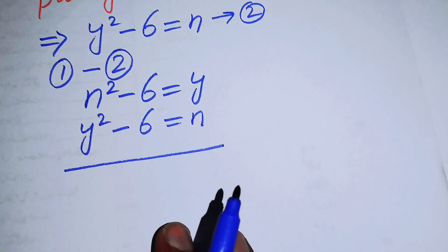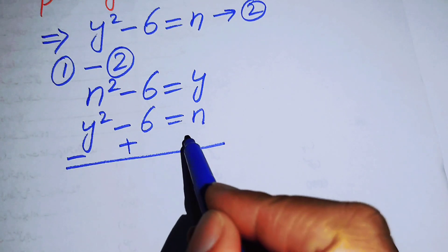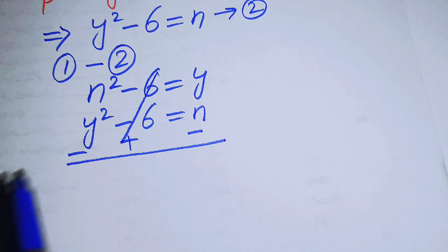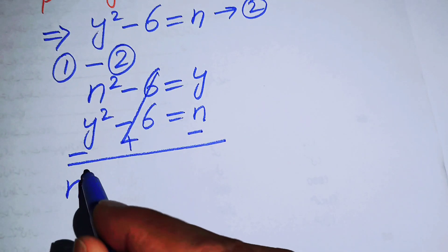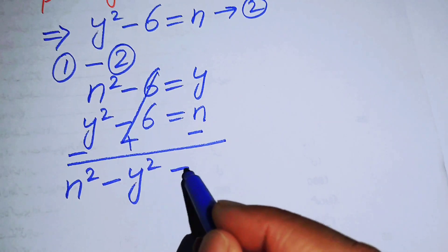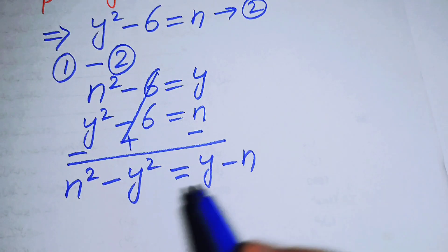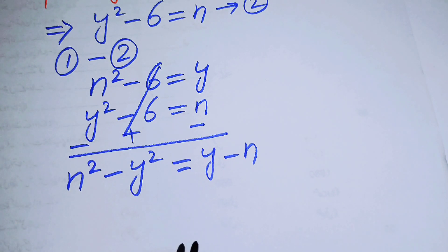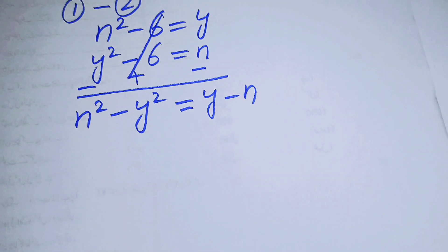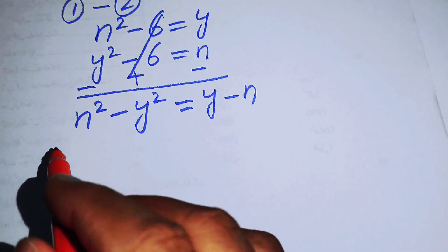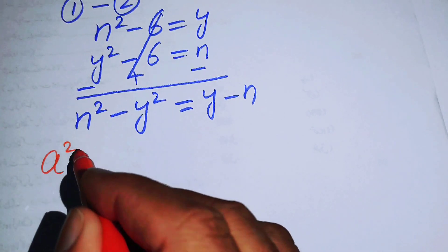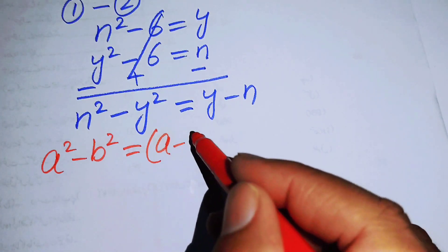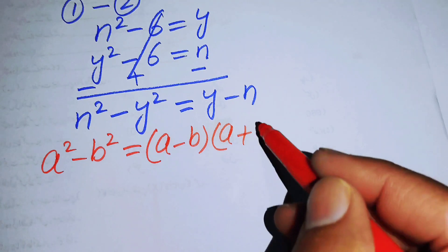Now we subtract equation 2 from equation 1. These two constant terms cancel each other, and on the left hand side we have n² - y², and on the right hand side we have y - n. We will use the difference of squares formula: a² - b² = (a - b)(a + b).